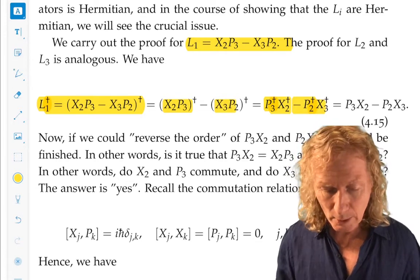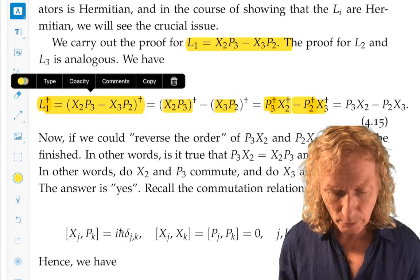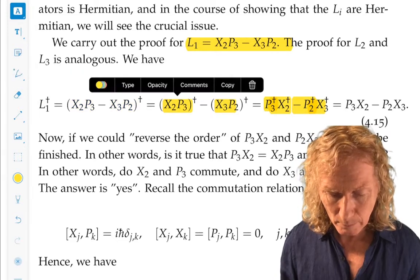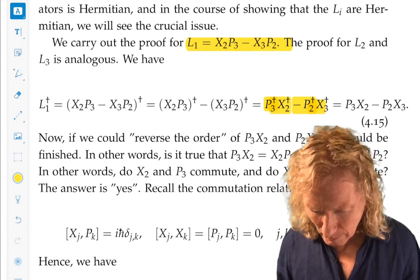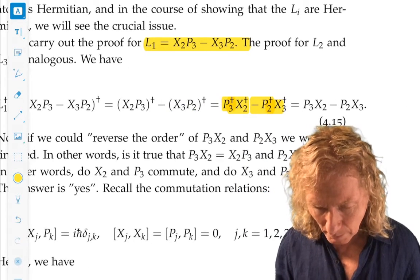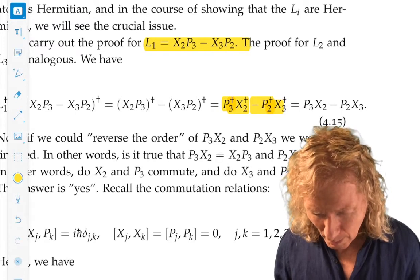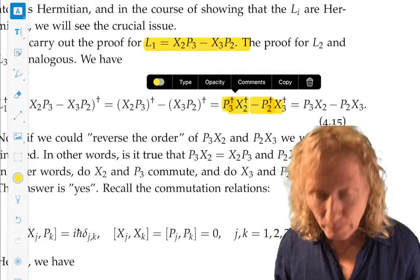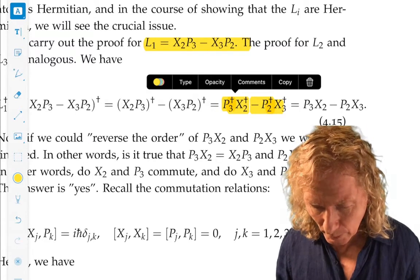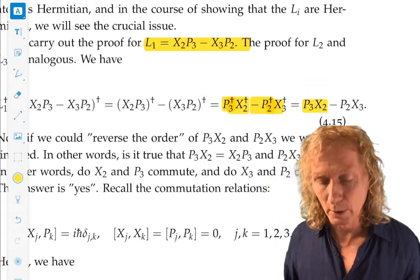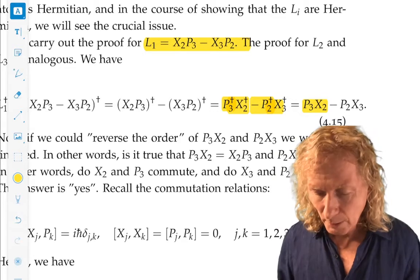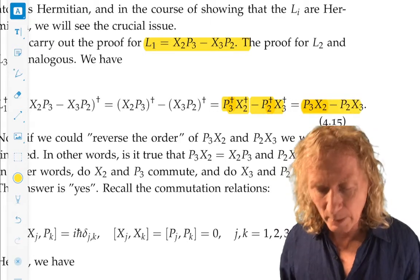Now, everything would be okay, meaning we'd be finished with the proof, if we could merely... sorry, I didn't say the final bit. P3 is self-adjoint, so P3 adjoint is P3, and X2 is self-adjoint, so X2 adjoint is X2.